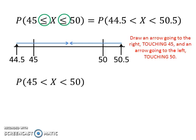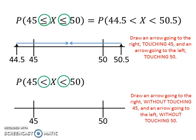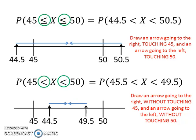Lastly, we have probability of x between 45 and 50. To determine whether to add or minus 0.5, draw a line with 45 and 50 on it like this. Because of the less than signs here, we need to draw an arrow going to the right of 45 without touching the 45, and an arrow going to the left of 50 without touching the 50. In order for the arrow to not touch 45, we move forward a little bit from 45. Since we move forward a little bit, we need to add 0.5 to 45. And since we reverse a little bit, we need to minus 0.5 from 50. Thus, the probability becomes probability of x between 45.5 and 49.5.